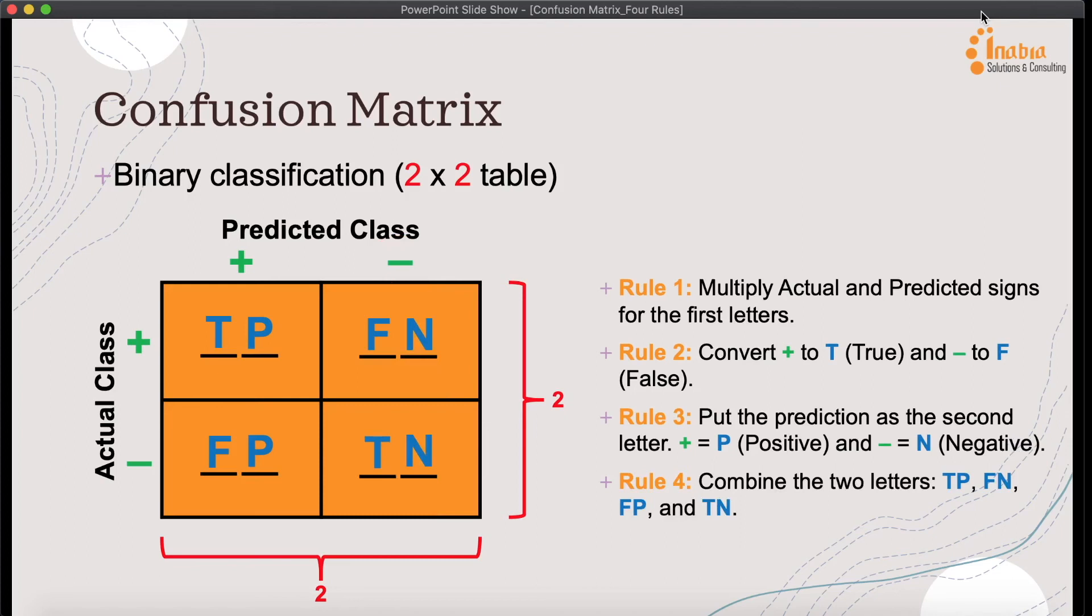The final rule, Rule Number Four: combine those two letters and we will get TP, FN, FP, and TN, which are True Positive, False Negative, False Positive, and True Negative.